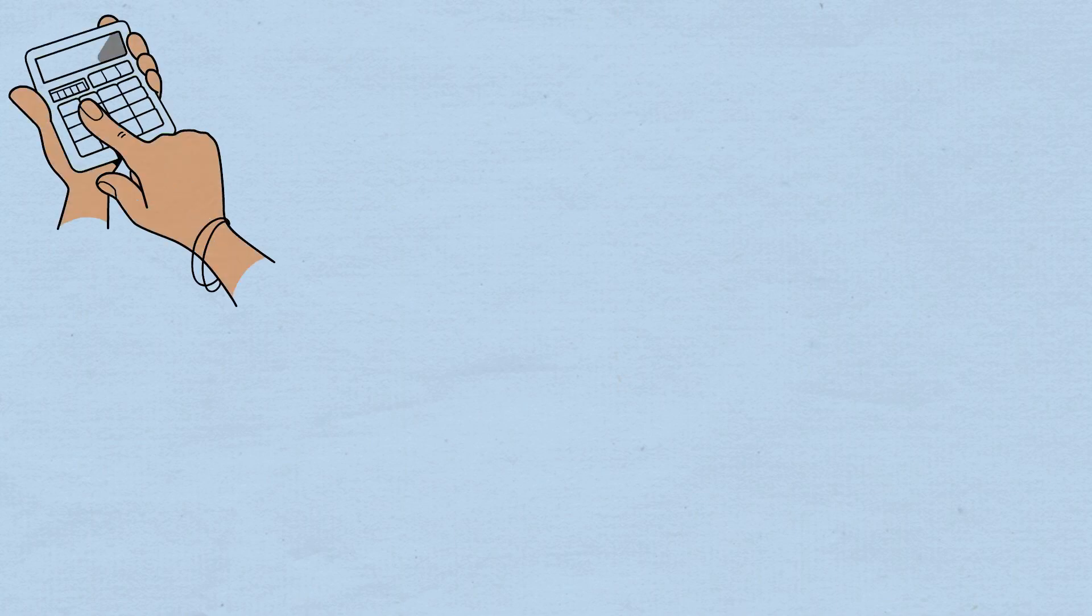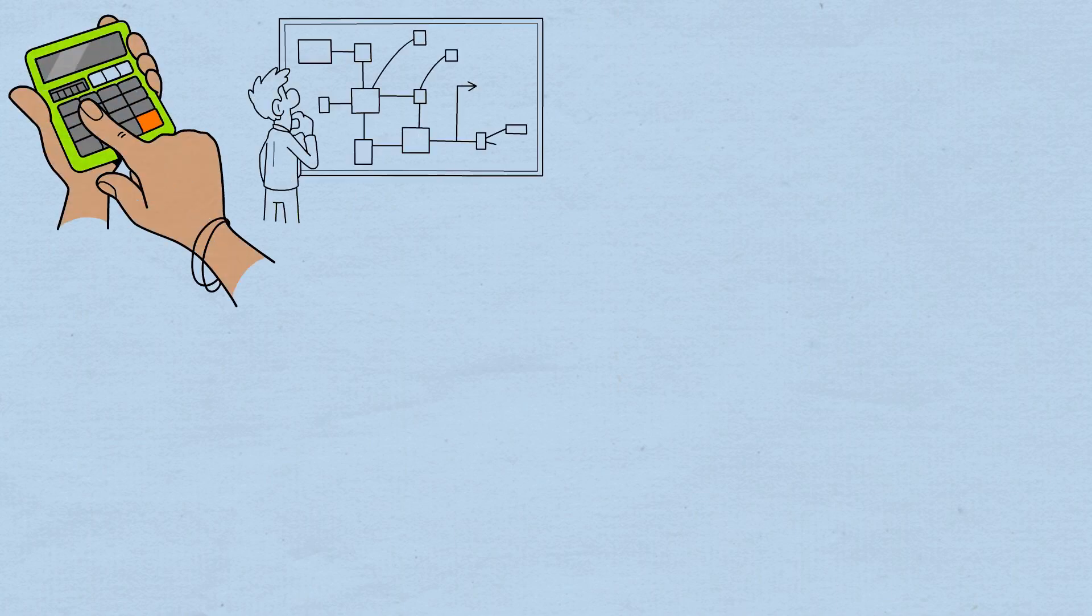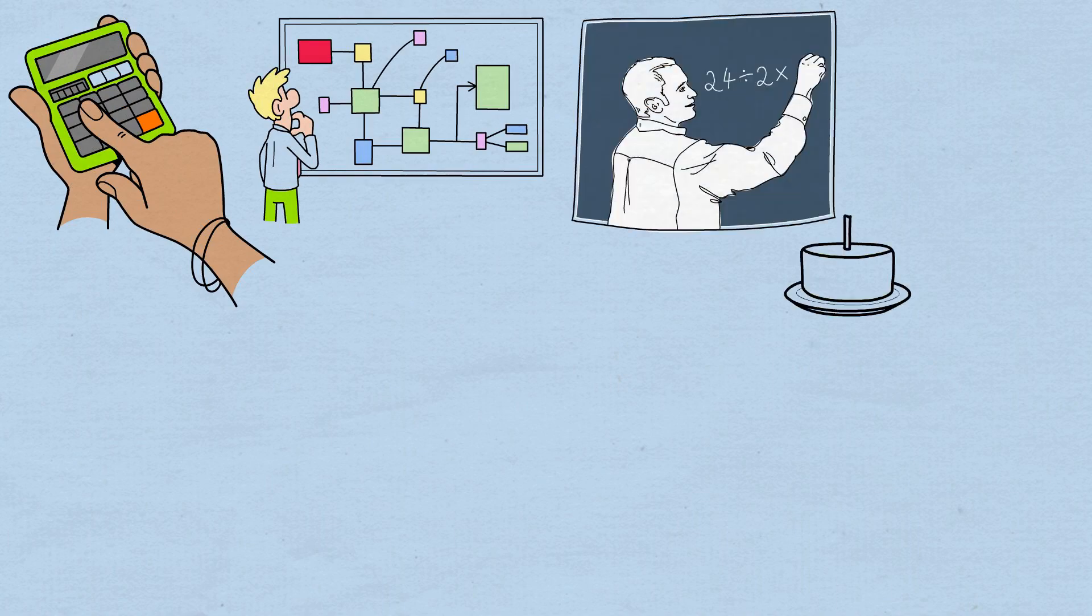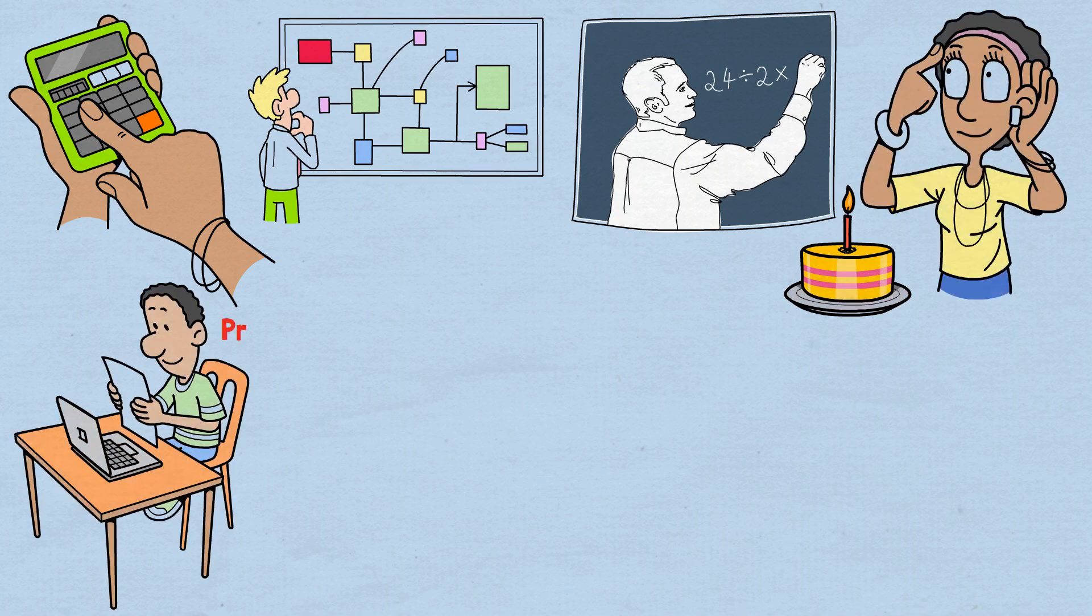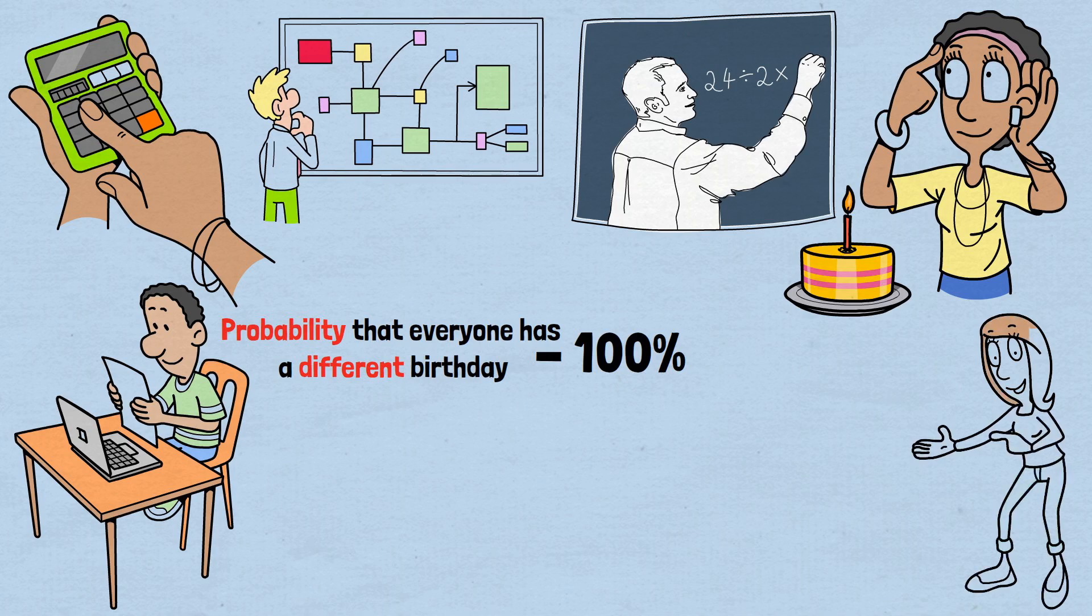Let's work through this calculation in a way that's easier to follow than a jumble of fractions. Instead of directly calculating the messy probability of finding a shared birthday, we'll use a clever approach. First calculating the probability that everyone has a different birthday, then subtracting from 100%. Here's how it works, step by step.